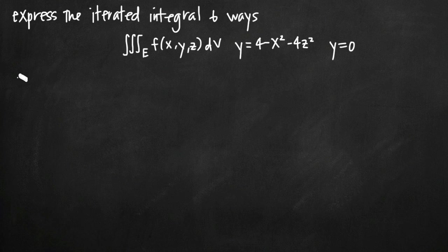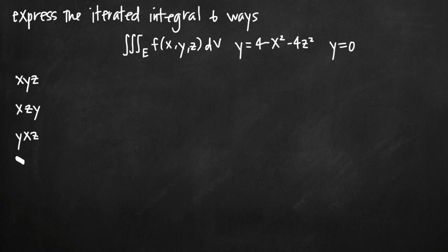We can go ahead and make that list right now: x, y, z; or starting with x and flipping the order — z, then y; starting with y, then x and z; or y, then z, then x; or starting with z and doing x, then y; or starting with z and then doing the opposite order — y, then x. These are the six different ways that we can express the integral.